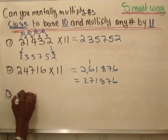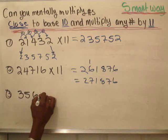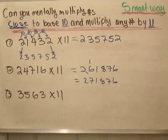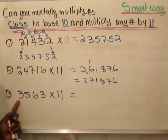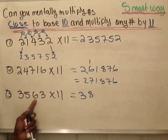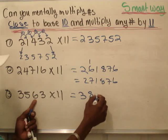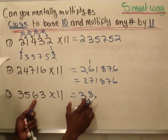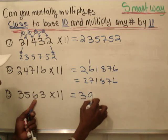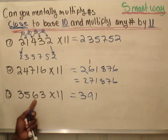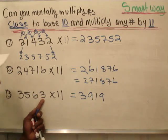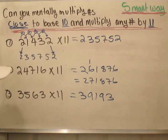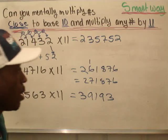Let's say we have 3563, multiplied by 11. We're going to have 3; then 3 plus 5 gives us 8; 5 plus 6 gives us 11 — so we put 1 and 1 here, and we're going to have to change this 8 to 9, giving us 9, 1. Then add this number onto this, giving us 9. Don't forget to put down the 3.